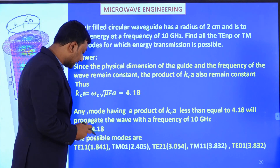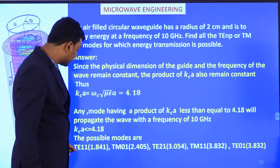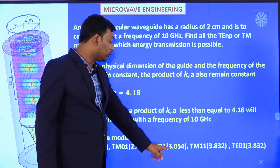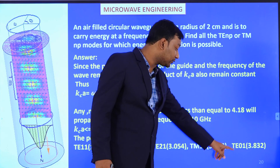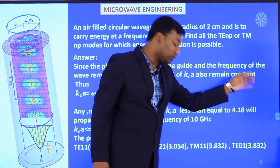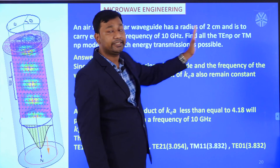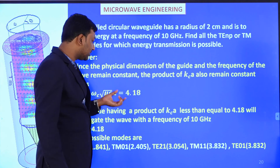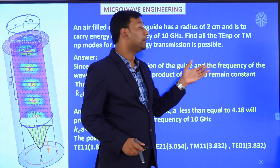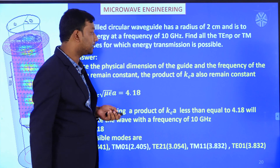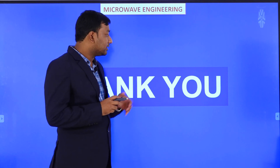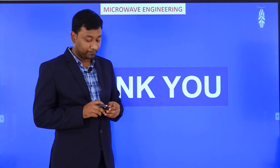The possible propagating modes with kc·a less than 4.1 are: TE11 with X'np equal to 1.841, TM01 with Xnp equal to 2.405, TE21 with X'np equal to 3.054, TM11 with Xnp equal to 3.832, and TE01 with X'np equal to 3.832. All these values are below 4.1, so these five modes can transmit energy at 10 GHz in this waveguide. Thank you, and in the next lecture we will start the cavity resonator.